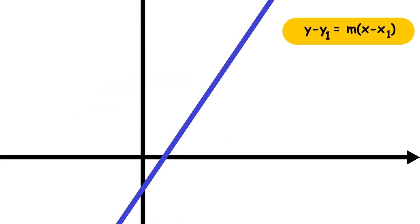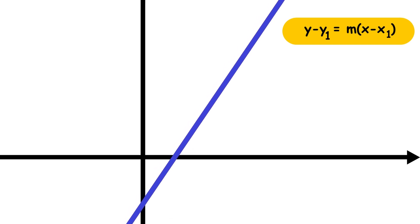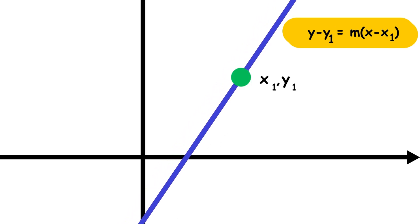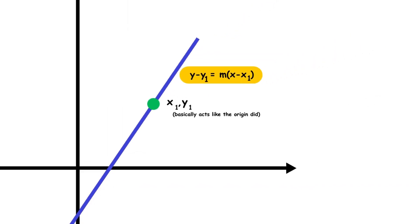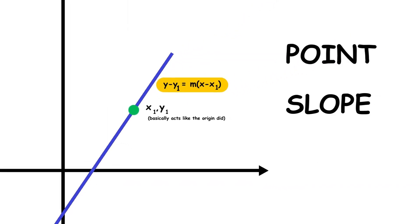Overall, shifting the line has the effect of moving it to intersect the point (x1, y1), where that point basically acts like the origin did. This form of the equation is known as point-slope form.